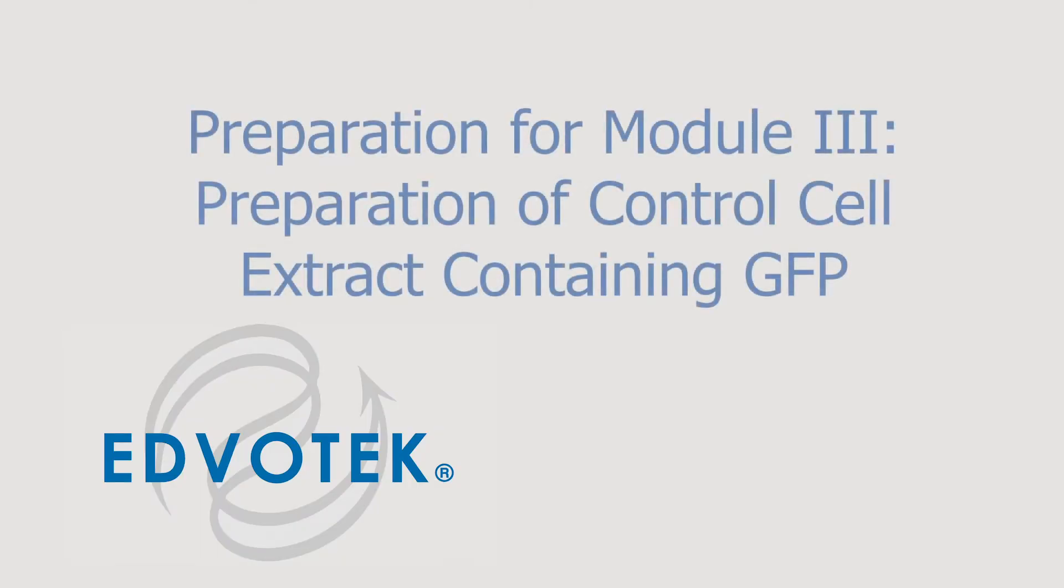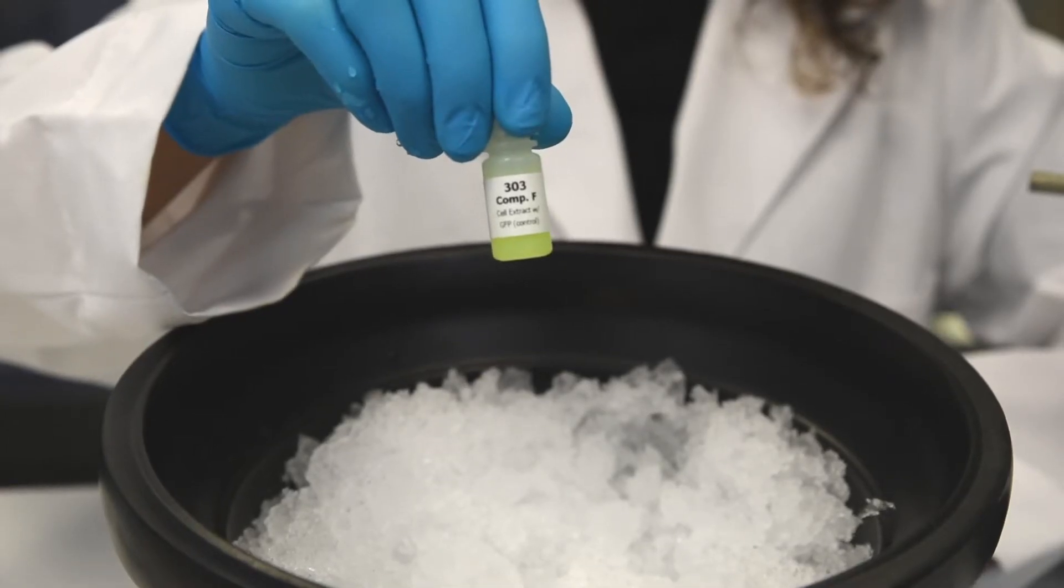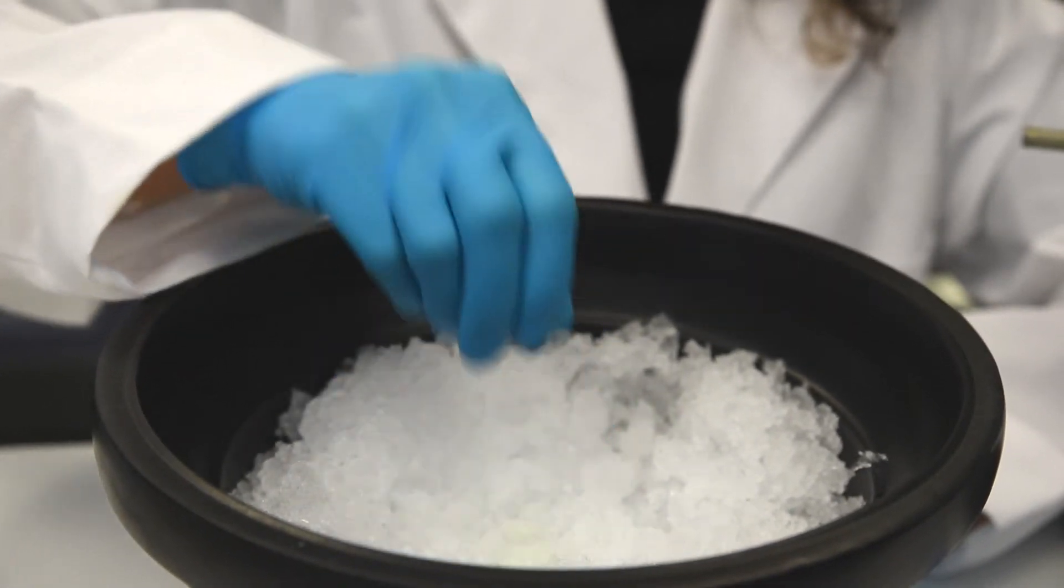Preparation of Control Cell Extract containing GFP, Step 6: Thaw the frozen Control Cell Extract GFP at room temperature and immediately place on ice.